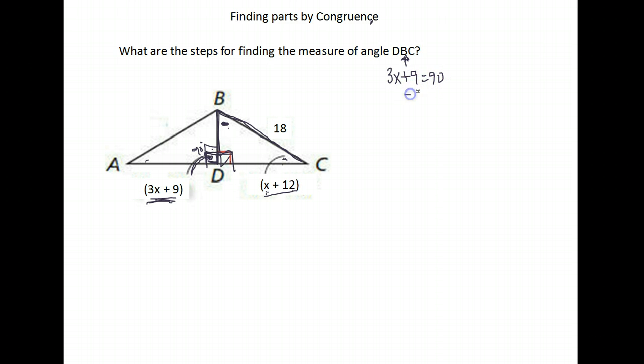I'm going to solve for X. So I would subtract 9 from both sides, and I get 3X equals 81. Divide both sides by 3, and I get that X is equal to 27. Okay, so that's my first step, was to set up the equation that 3X plus 9 equals 90 and solve to get my value of X. X is 27.